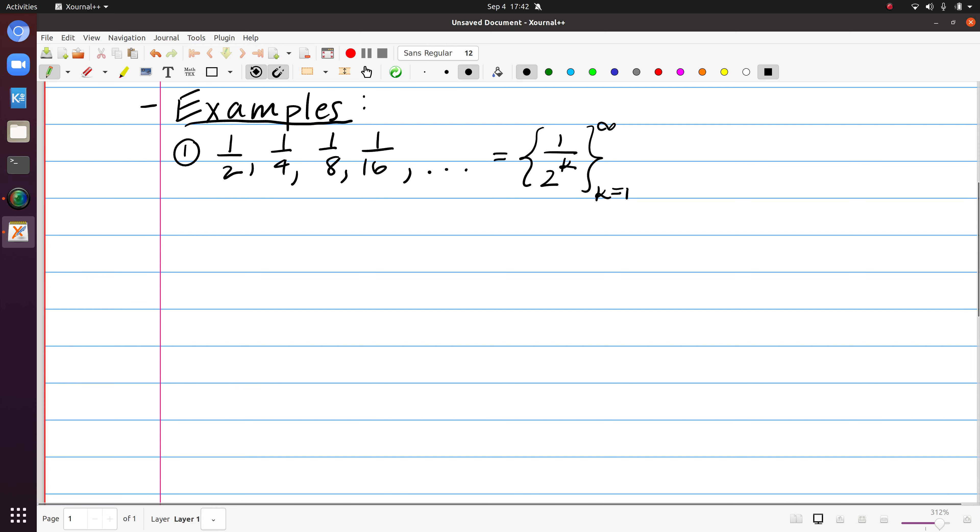So a second example, if I had 2, 4, 8, 16, and so on. Here the pattern seems to be of the form 2 to the kth power, starting with k equals 1, and again going on forever.